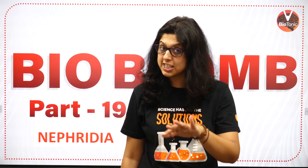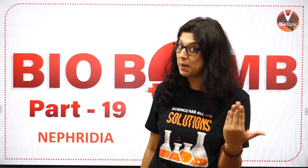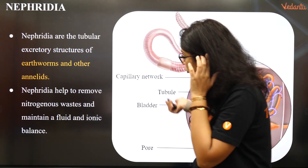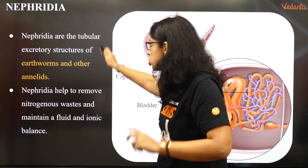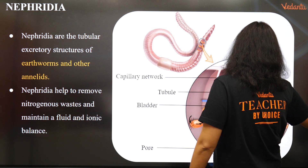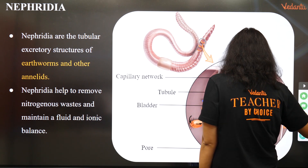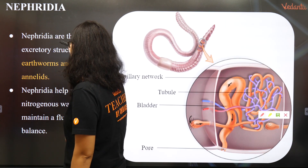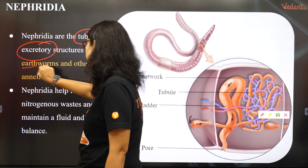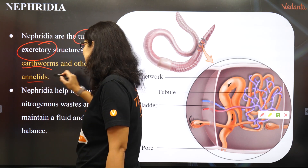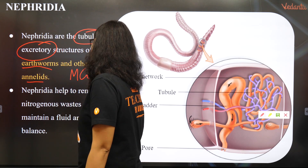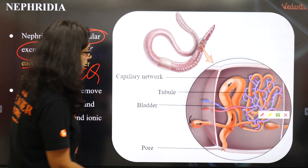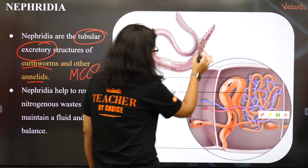So, nephridia kya hota hai? We have seen other excretory systems. Nephridia are the tubular excretory structures — we have seen flame-shaped ones — so they are the tube-shaped excretory structures of earthworm and annelida. Direct MCQ questions come from this tubular structure.